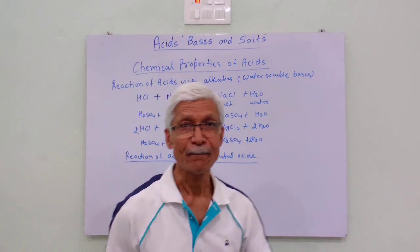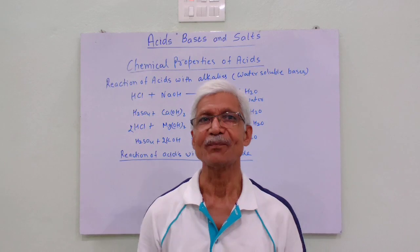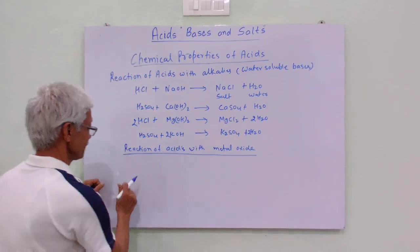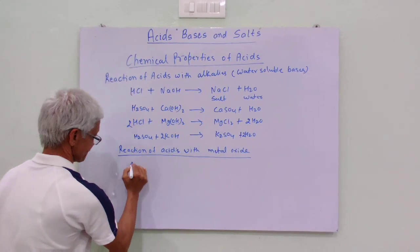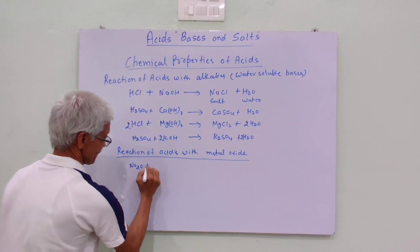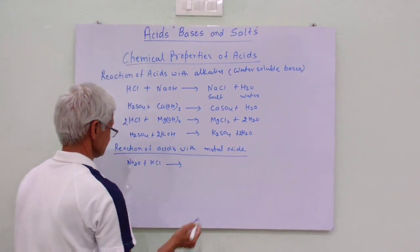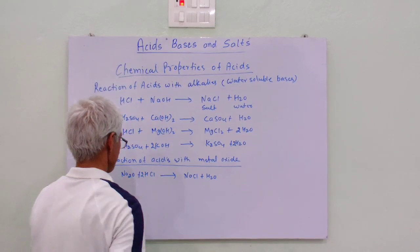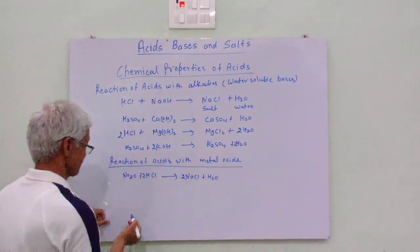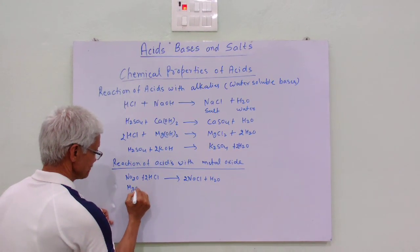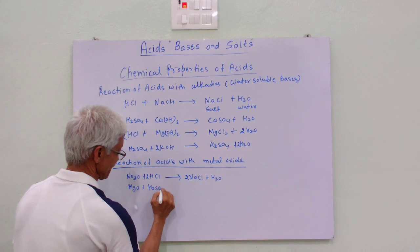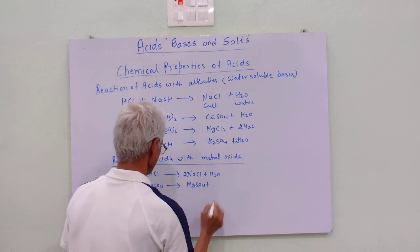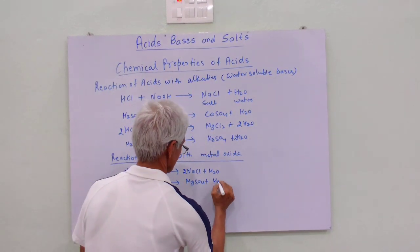Metal oxides are basic in nature, so the same reaction takes place as with alkalis — they form salt and water. For example: Na₂O plus HCl gives NaCl plus H₂O. Another example: Na₂O plus H₂SO₄ gives Na₂SO₄ plus H₂O.